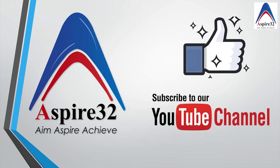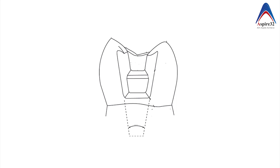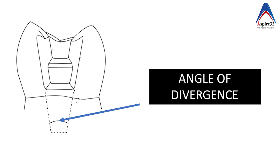The angle of convergence is meant for extracoronal preparations because the walls converge. Whereas in preparations meant for intracoronal restorations — for example, inlays — the walls diverge toward the occlusal surface. In this image you can see the buccal and lingual walls diverging towards the occlusal surface.